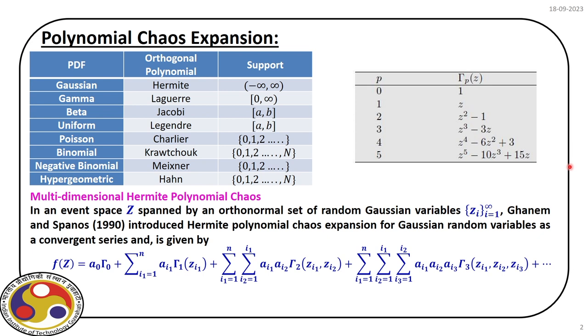Hello everyone, welcome back. The last lecture on metamodel-based reliability analysis is the adaptive response surface method. In this lecture, we are going to apply orthogonal polynomials, taking advantage of the moving least square approach discussed in the previous lecture, and combine moving least square with orthogonal polynomials to construct the adaptive response surface method, also called sequential response surface method.